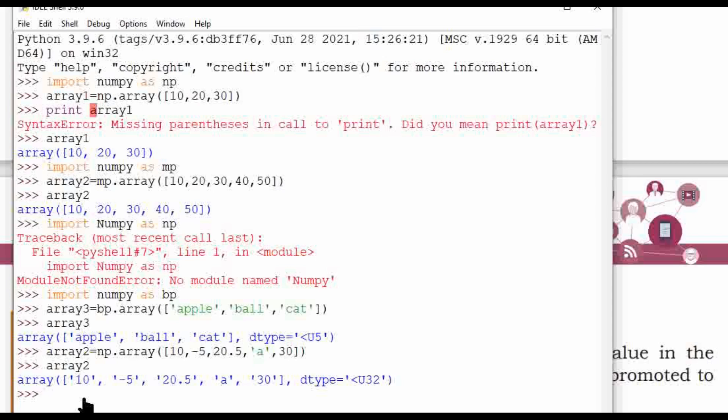So I hope all of you have understood what is NumPy, how to execute commands on NumPy, how to make a list, how do you create an array, and what happens when in a list if some items are different, or if one of the items is string, then other numeric items are also promoted to string.